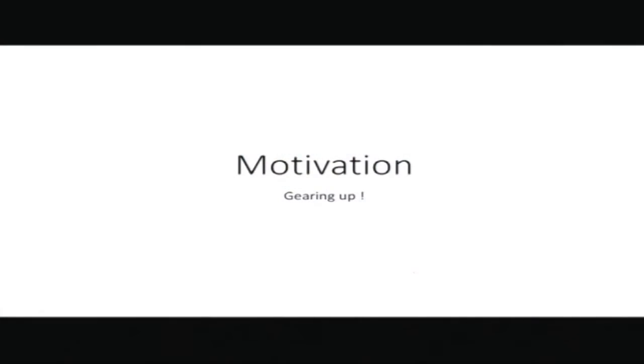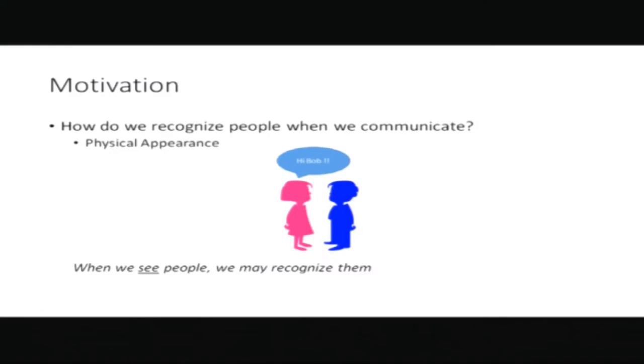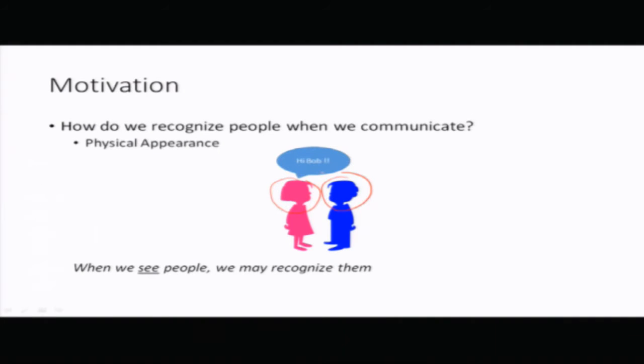We start this lecture with some analogies. In our day-to-day life we interact with a number of human beings and we are somehow able to identify them. We will start with analogies between human beings and then continue with how systems try to identify entities. When we see people and meet each other face to face we are able to recognize them. We use the physical appearance of a human being — it could be the face, the height, or anything that we can see.